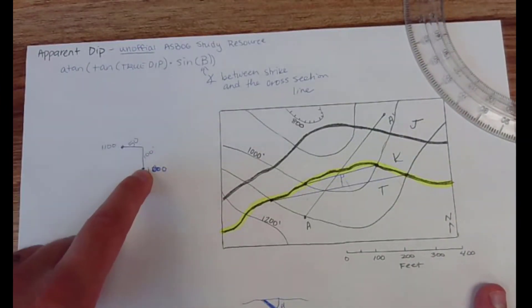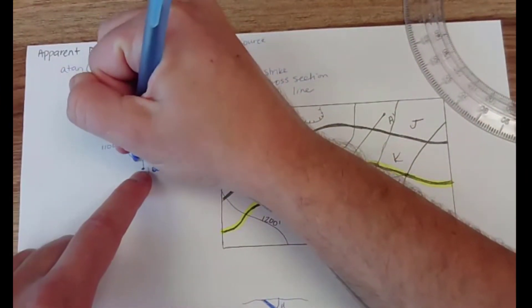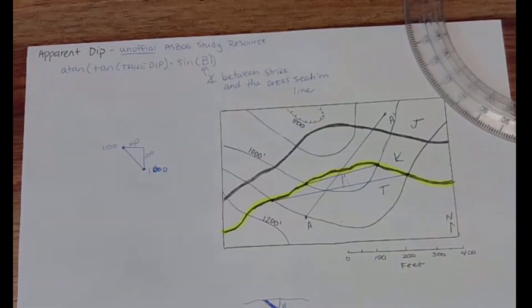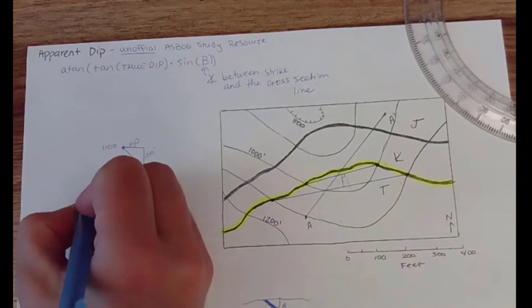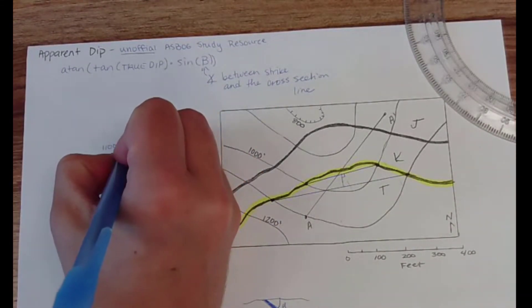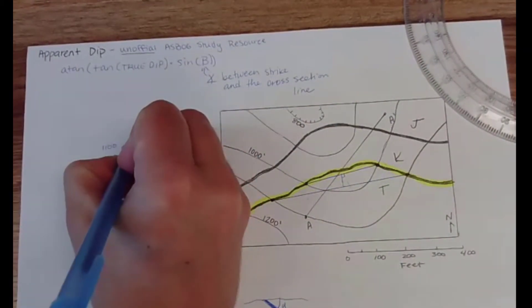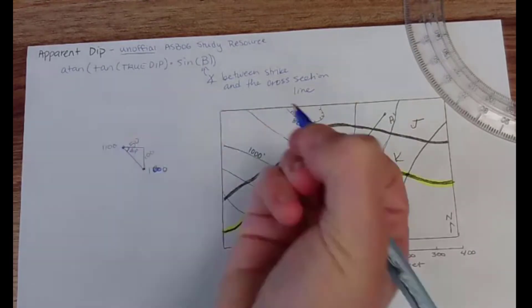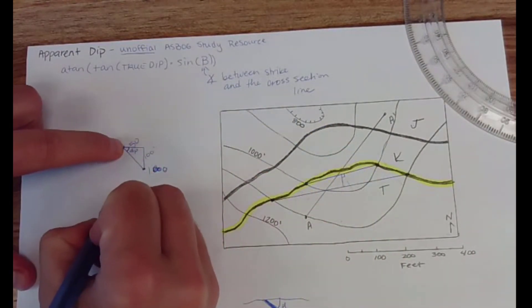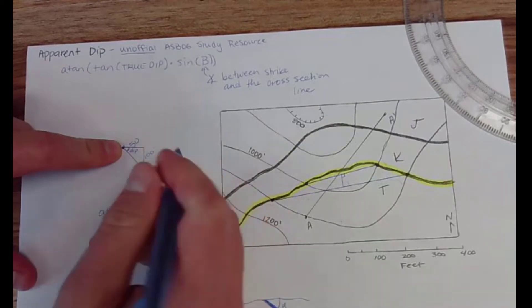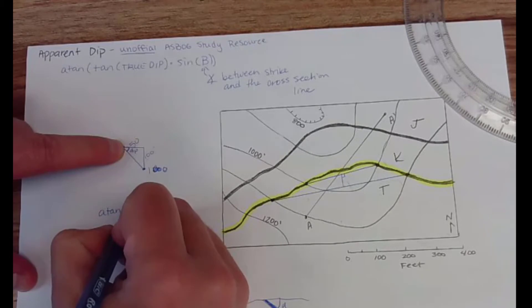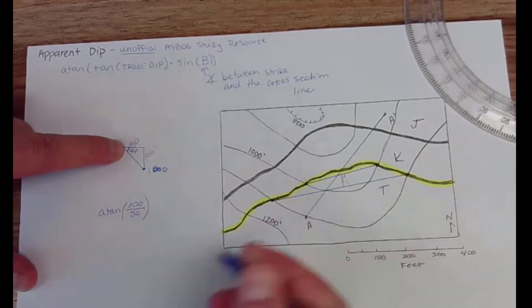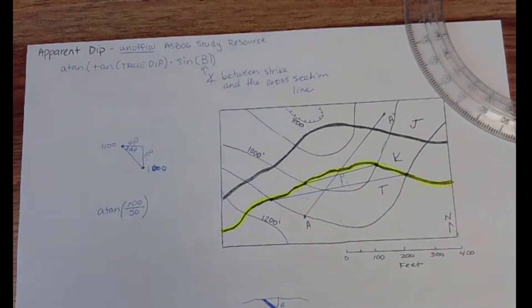So if I walk over 50 feet then I am walking down 100 feet. So what is the dip of my bed? I'm gonna do dip is the angle from the horizontal, so this is my true dip: arctan opposite over adjacent, 100 divided by 50.